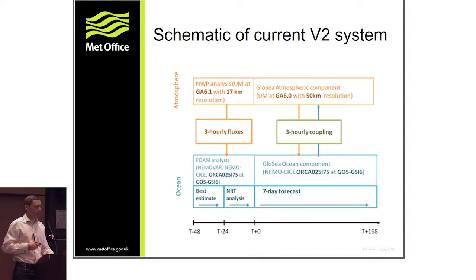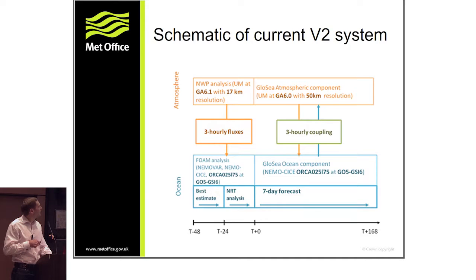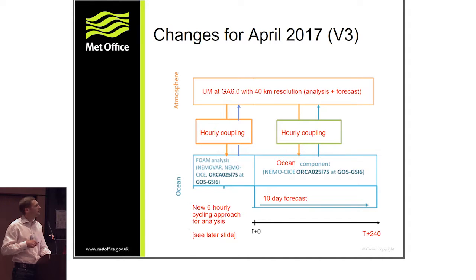That was the V2 system, which has been running for quite a while. For V3, the main change is that the ocean-only initialization is going to be replaced by a coupled initialization, so we'll have coupling between atmosphere and ocean even in the analysis part of the system. The forecast system remains more similar, though we're extending the forecast slightly, increasing to hourly coupling, and moving to one self-contained system rather than separate FOAM and GloSea5 systems.